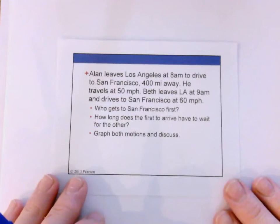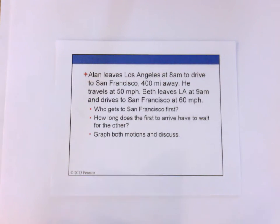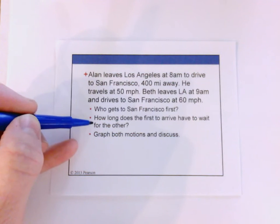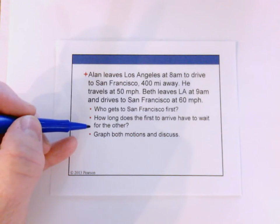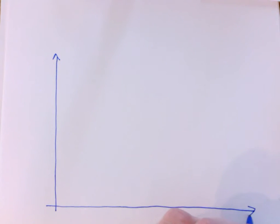Now we go back to the printed lecture notes. The slide is: Alan leaves Los Angeles at 8 a.m. to drive to San Francisco. We're going to assume the motion is uniform, and we'll use the information given about the distance from Los Angeles to San Francisco and the times that Alan and Beth leave. We'll create a motion graph for each person, then use that graph to answer: who gets to San Francisco first, and how long does the first person to arrive have to wait for the second? Let's graph this, putting distance traveled on the y-axis and time on the x-axis.